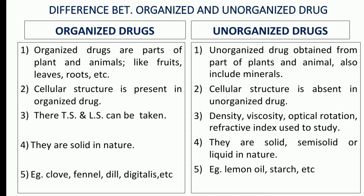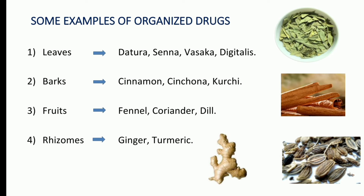Now we will see the examples of organized drugs. Leaves include datura, senna, vasaka, and digitalis. Barks include cinnamon, cinchona, and kurchi. Fruits include fennel, coriander, and dill. Rhizomes include ginger and turmeric.